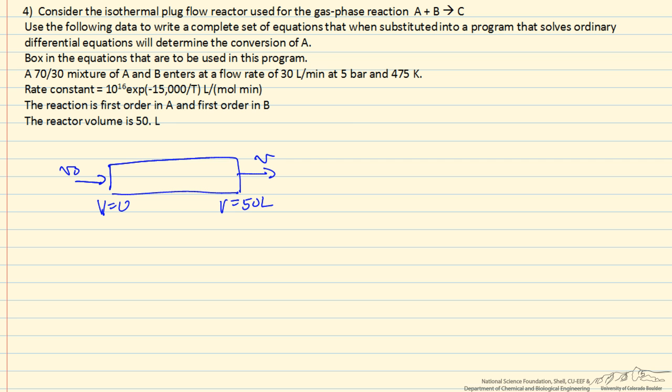And what we're going to do is write down mass balances, and the easiest way is to write mass balances for A and B. Now we'll need initial conditions. At V equals 0, we're going to need FA0, which is 0.7 of F total 0, and FB0, which is 0.3 of F total 0.